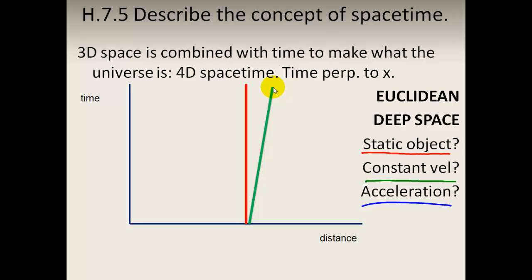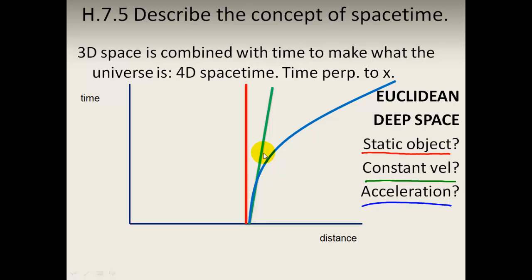This is a line which shows the position as it changes in four-dimensional space-time with flat geometry. What happens if it's accelerating? We know what an acceleration curve looks like — it's getting faster and faster. So this shows us a static object, an object at constant velocity, and an accelerating object. You may need to be able to sketch what these lines look like on this type of axis.